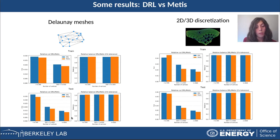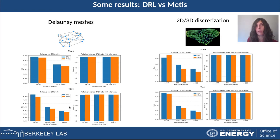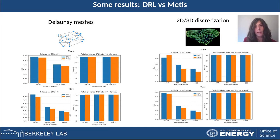Notice that we include in the testing dataset also some graphs with a larger number of nodes compared to those used for training. We can see that also for these graphs the results are very close to those of METIS.